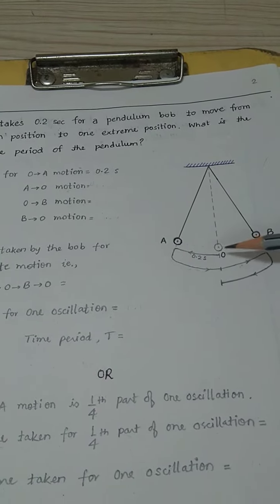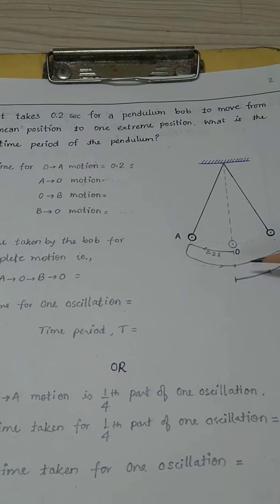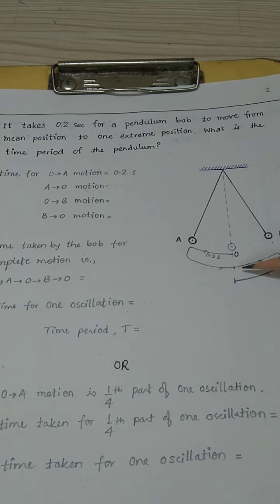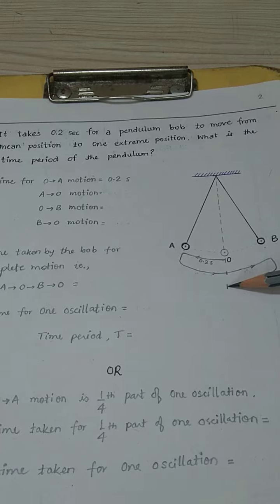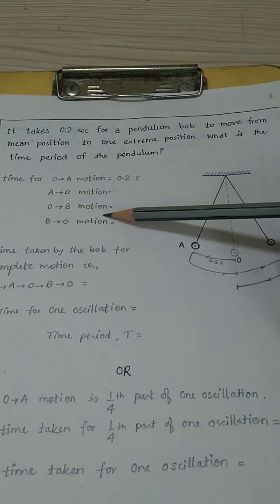Since one oscillation has four equal motions, that is O to A, A to O, O to B, and B to O. Each motion takes equal time.